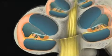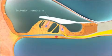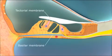The scala media includes structures from the tectorial membrane, basilar membrane, and hair cells, which sense the mechanical forces.